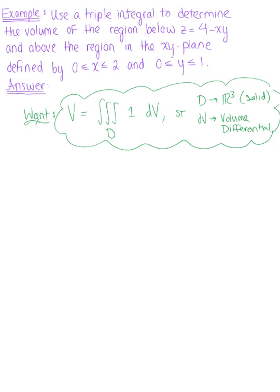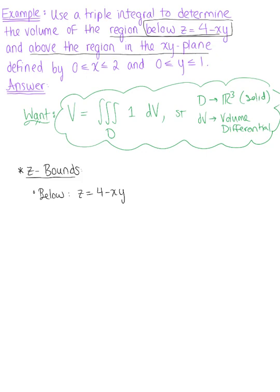The first thing we need to do is determine the bounds. We'll start with the z-bounds. Looking at what's given, we want to find the volume of the region below z equals 4 minus xy and above the region in the xy-plane. The xy-plane is defined by z equals 0, so z is greater than or equal to 0 but less than or equal to 4 minus xy.